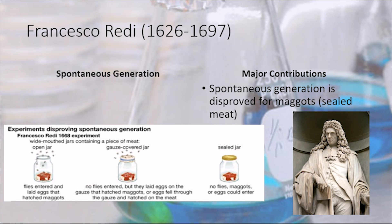Next we're going to go to Francisco Redi. Francisco Redi was an Italian physician and poet who demonstrated that the presence of maggots in putrefying meat does not result from spontaneous generation but from eggs laid on the meat by flies. Spontaneous generation is the hypothetical process by which living organisms develop from non-living matter, and the archaic theory that utilized this process to explain the origin of life.